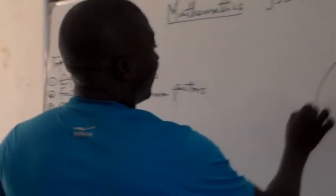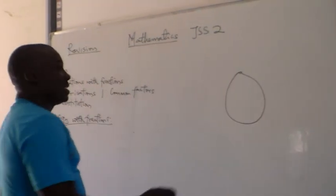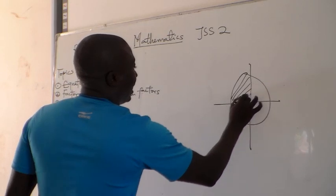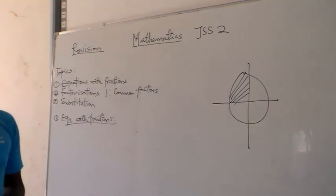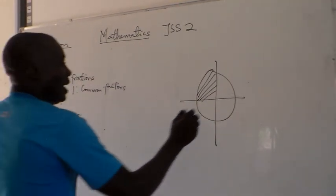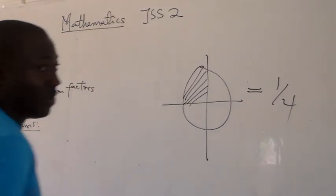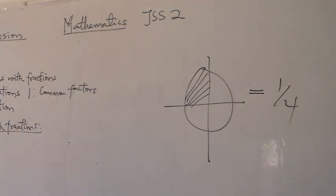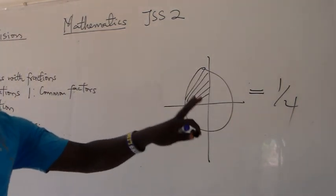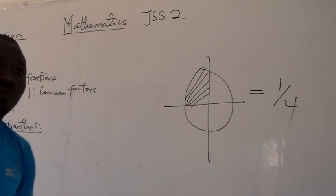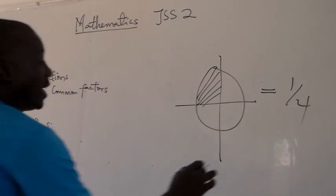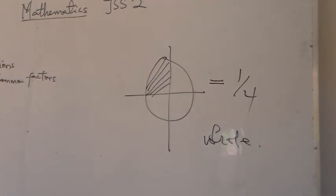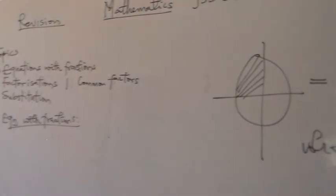For example, if I have a complete circle and I decide to divide it into four parts, and I shade one part, the shaded part is the same as one over four. This circle has been divided into four different parts, and the combination of all of these parts will give us a whole — the complete circle back. That's why we define a fraction as part of a whole.